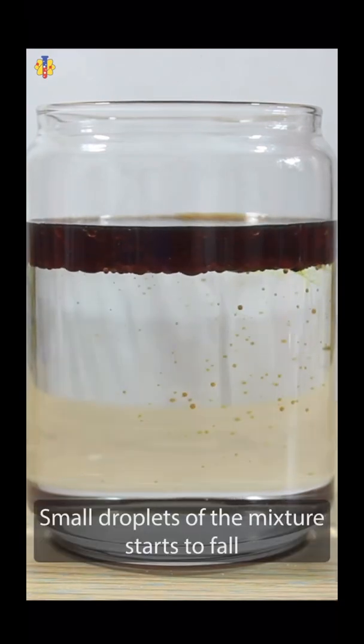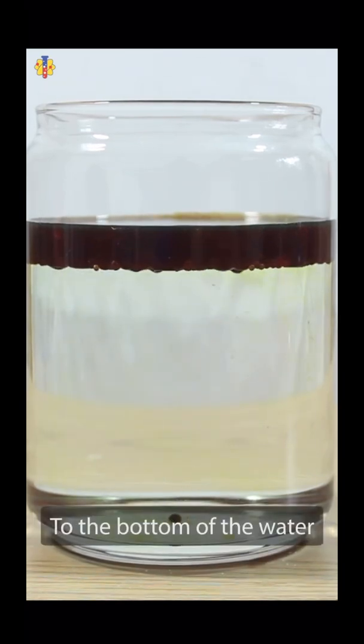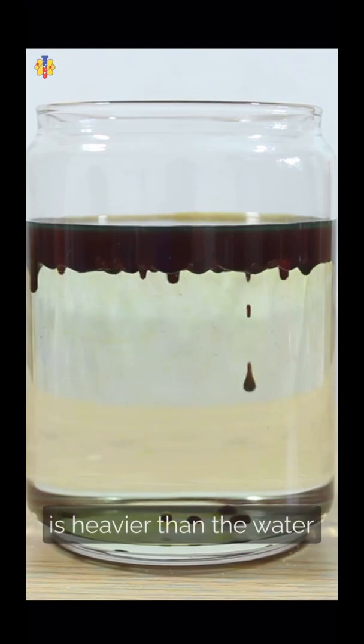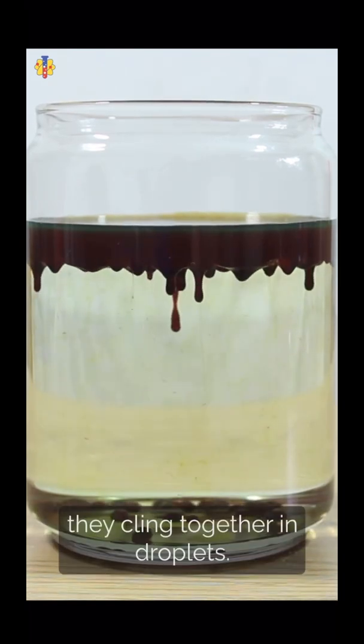Small droplets of the mixture start to fall to the bottom of the water. This is because the food dye and the oil mixed together is heavier than the water. They cling together in droplets.